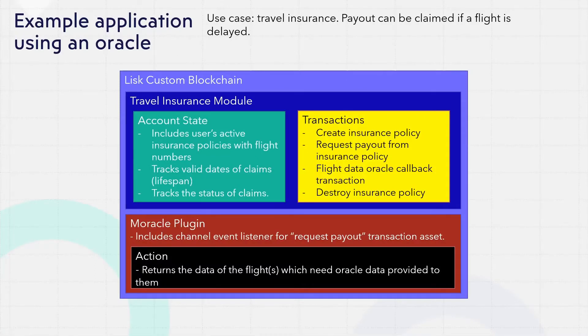Here's an example application which is powered by a blockchain oracle. Suppose we want to offer a decentralized form of travel insurance. The user can post up a small number of tokens and receive a larger payout if their flight is delayed. It has several components as illustrated by this diagram. Within the travel insurance module, the account state is configured to store the user's active insurance policies and flight numbers, the lifespan of their claims, and their current status.